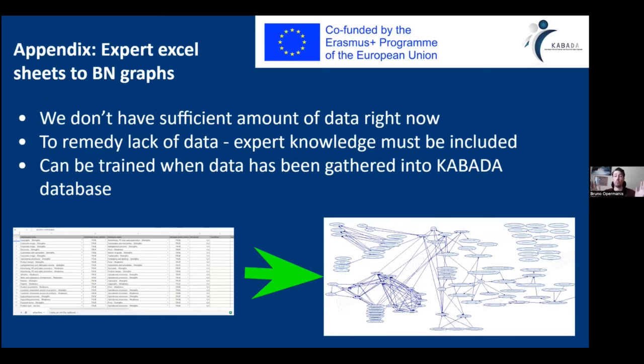We want to use AI, but we don't have data yet. What we can do is leverage expert knowledge and encode this expert knowledge into the Bayesian network graph structure.